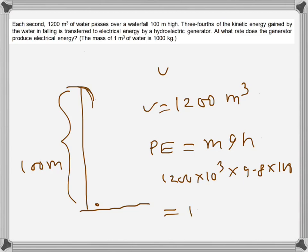So once I do that, the potential energy becomes 1.177 into 10 to the power 9 joules. So that's the potential energy and that potential energy will be converted into kinetic energy fully when it comes below, the whole water.